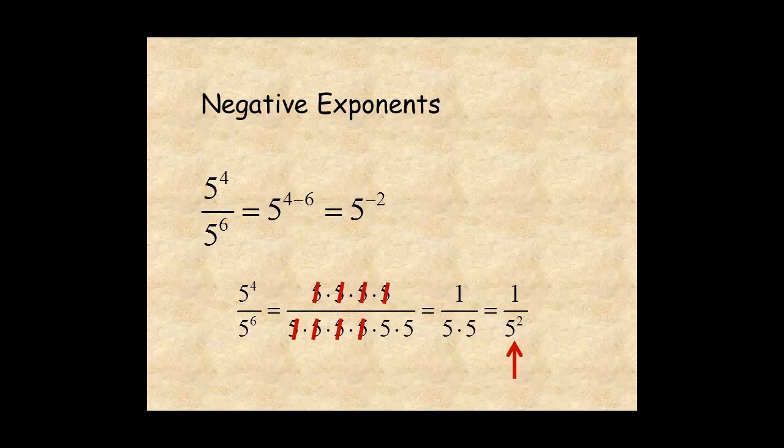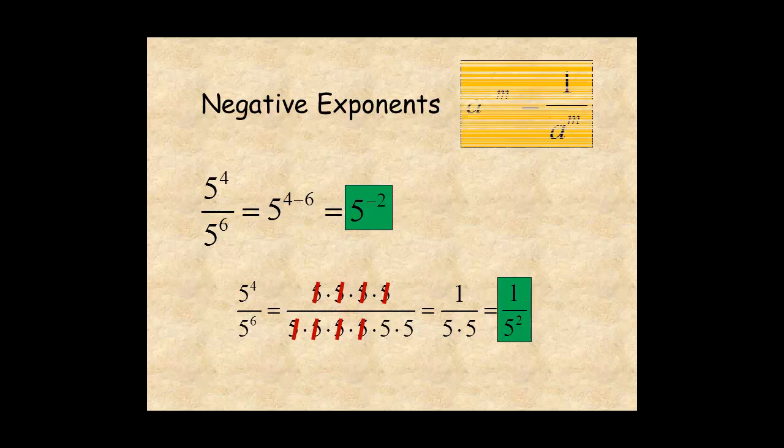So you can see that 5 to the negative 2 is equal to 1 over 5 to the positive 2. So the rule is rewrite a negative exponent as the inverse of the same power.